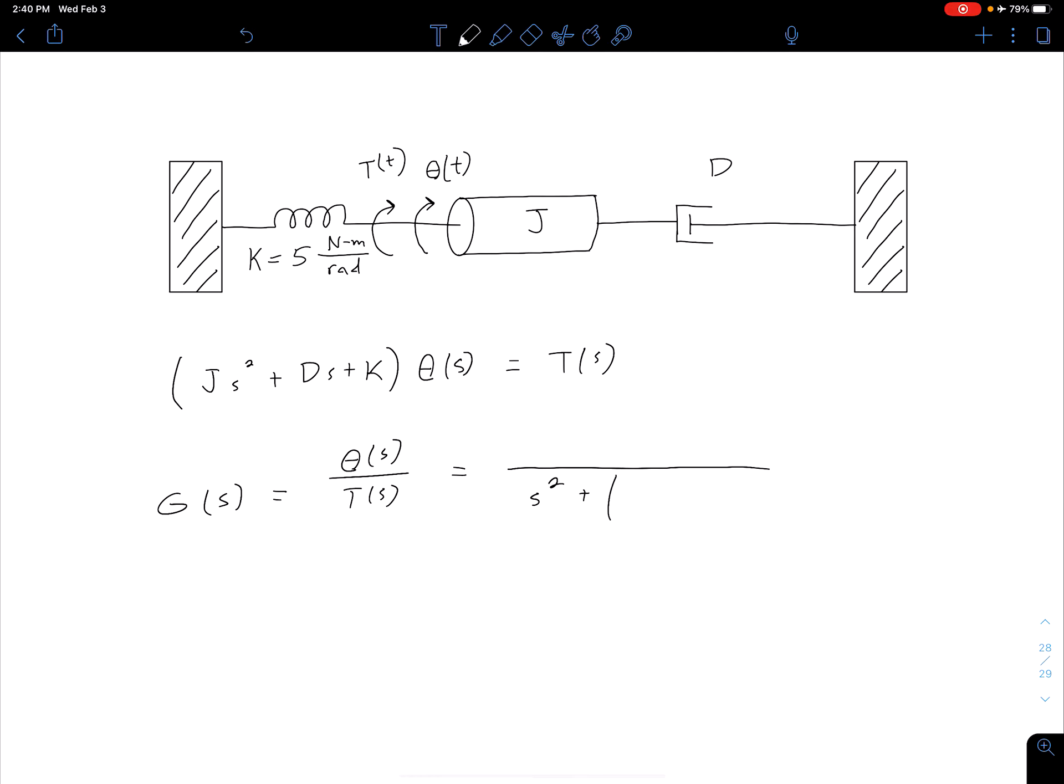The reason I'm doing that is so we can more easily compare to our general equation form that we saw previously. So now we have D/J times s plus K/J is our constant term in the denominator. And then in the numerator we have 1/J.